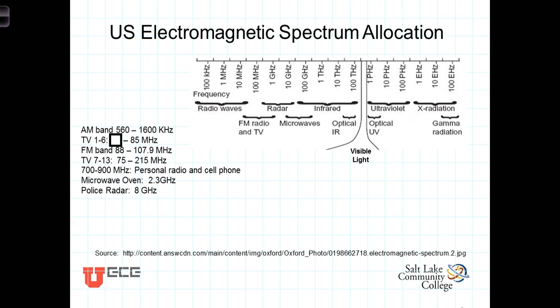For example, the AM radio dial, if you were to look at an AM radio dial, you'd see down on the lower end, it starts at 560 kilohertz and goes up to 1,600 kilohertz.